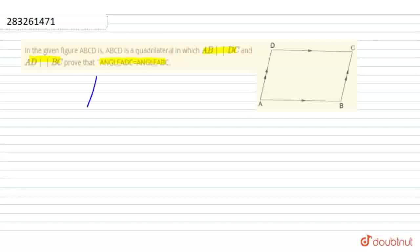Now, we have two pairs of lines that are parallel. ABCD is a quadrilateral. And we have been told that AB is parallel to DC, and AD is parallel to BC. This is given.